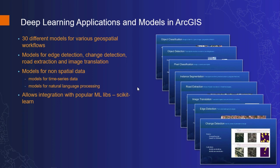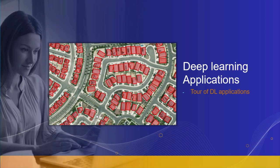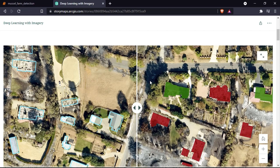There are more than 30 different models available catering to specific GIS tasks, ranging from object detection to image classification, image enhancements, change detection, and much more. There are also deep learning models that work on non-imagery data like tabular, time series data, and unstructured text data. Additionally, ArcGIS enables integration into third-party machine learning and deep learning frameworks. Now let's look at some of these models and their applications.